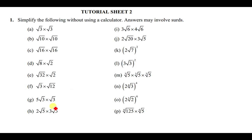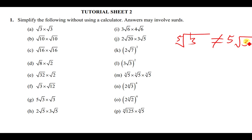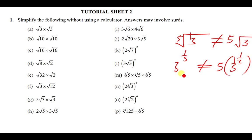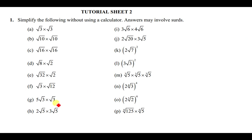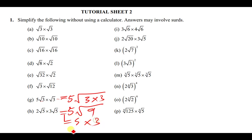Important distinction: 5√3 is not the same as ⁵√3. The fifth root of 3 (⁵√3) means 3^(1/5), whereas 5√3 means 5 times 3^(½). So 5√3 × √3 = 5 × √(3×3) = 5 × √9 = 5 × 3 = 15.